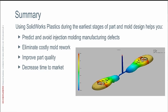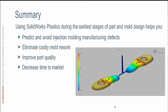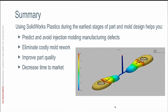To summarize: best practices in plastics part design — if you remember nothing else — maintain uniform part wall thickness, follow rib design guidelines, always gate from thick to thin, and always try to minimize weld lines. When it comes to SOLIDWORKS Plastics itself, using it during the earliest stages of part and mold design helps you predict and avoid injection molding manufacturing defects, eliminate costly mold rework, improve your part quality, and decrease time to market.